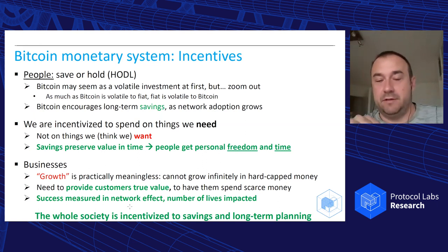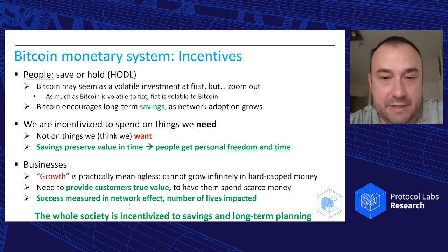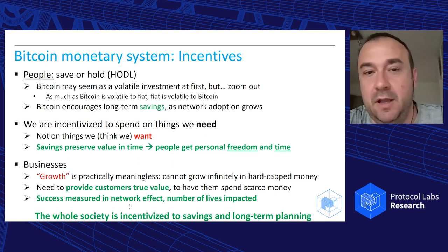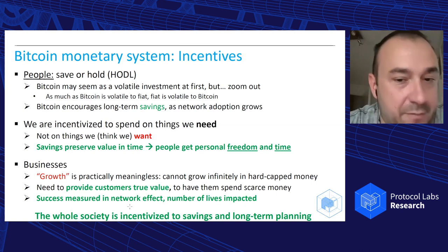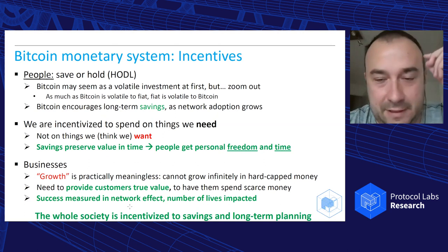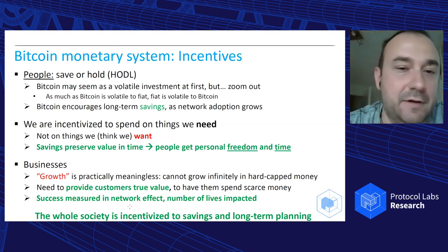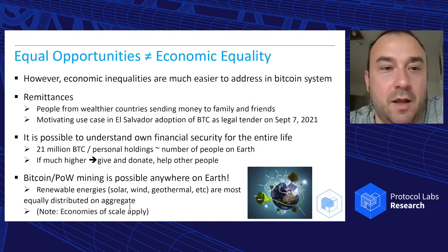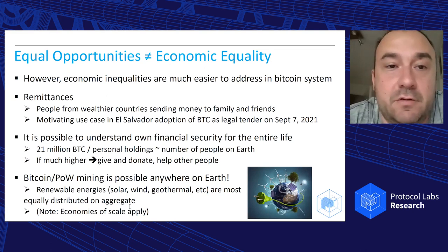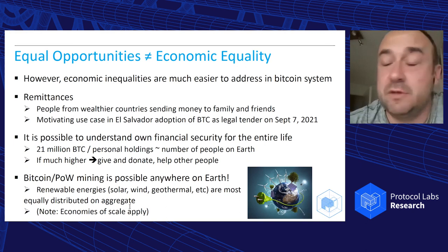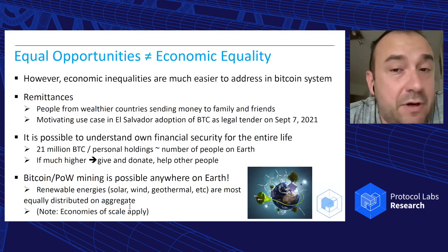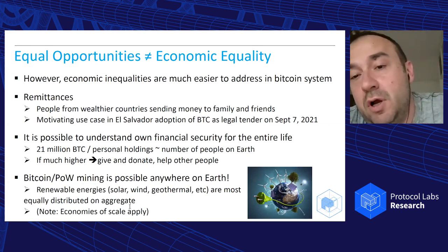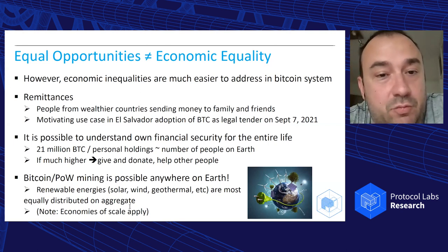Society changes completely. If 8 billion people are more incentivized towards savings as opposed to spending, the whole behavior of the whole species is different. I decided to share this argument because I didn't hear it repeated much, and for me this was the turning moment — like waking up in the Matrix — when I understood it. Equal opportunities in Bitcoin does not mean economic equality — Bitcoin and proof of work provide equal economic opportunities but not necessarily equality. However, these economic inequalities are much easier to address in Bitcoin than in current monetary systems — remittances are one example.